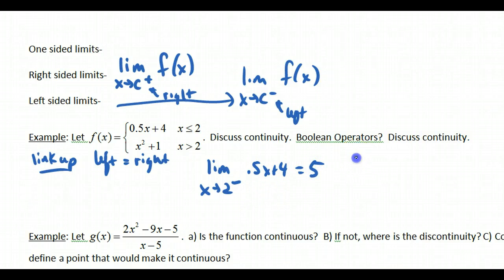And if I do the limit from the right, that would fall under this situation, x squared plus 1. Direct substitution gives me 5 as well. Since this number is the same, these did link up, and thus we have a continuous function. So we would have continuous.